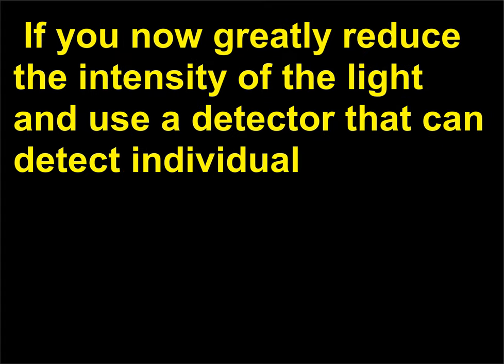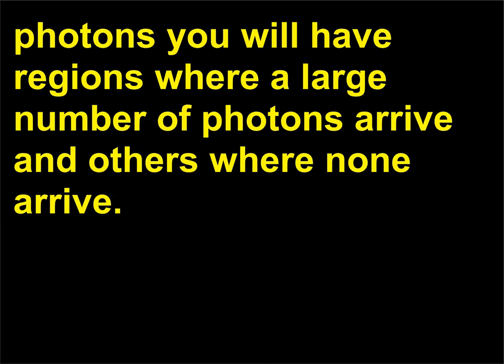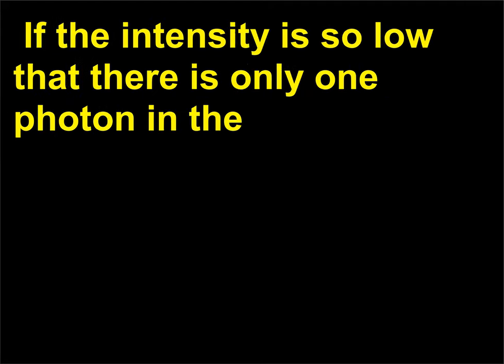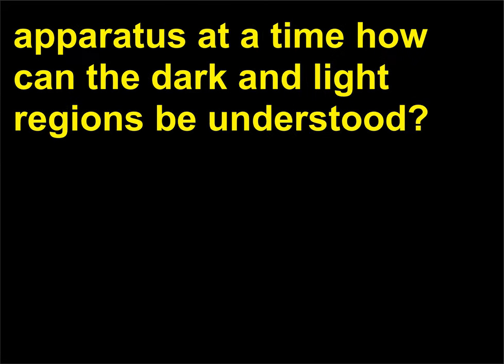If you now greatly reduce the intensity of the light and use a detector that can detect individual photons, you will have regions where a large number of photons arrive and others where none arrive. The regions are exactly where the dark and light stripes were. If the intensity is so low that there is only one photon in the apparatus at a time, how can the dark and light regions be understood?